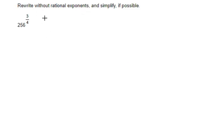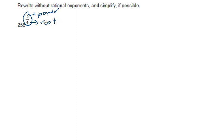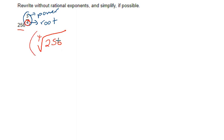Rewrite without rational exponents — that means we want to put this back in radical form. Whenever you have an exponent that is a fraction, it's going to be a radical. The top number is the power that you're taking, so we're raising it to the third power. The bottom number in your exponent is the root that you're taking. So we have to apply both of these to 256 — raise it to the third power and take the fourth root. The best order is to apply the root first, then raise that answer to the third power.